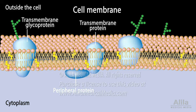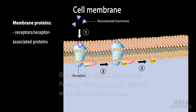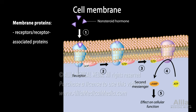Membrane proteins fulfill a variety of functions. As receptors or receptor-associated proteins, they receive messages from outside the cell. For example, a non-steroid hormone must bind to a membrane receptor and act via several other membrane proteins to activate a cellular response. Each receptor is specific to a certain molecule.